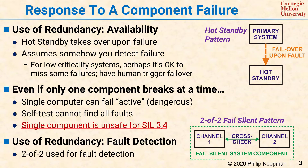With the 2-of-2 pattern, there are two identical computers called Channel 1 and Channel 2. Each of those identical channels has its own independent set of inputs, and the two channels run identical software and identical computations. The two channels continually cross-check their internal state.